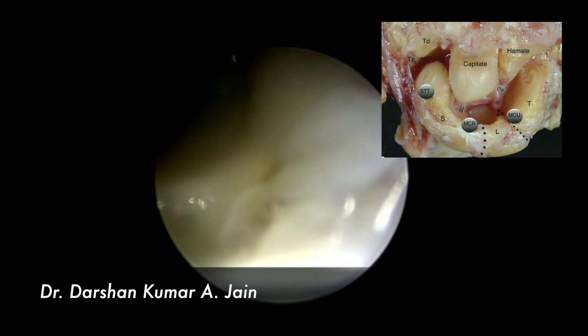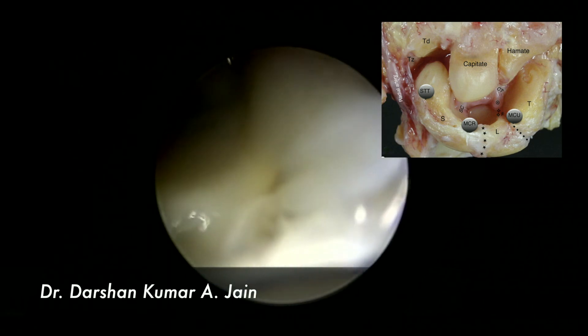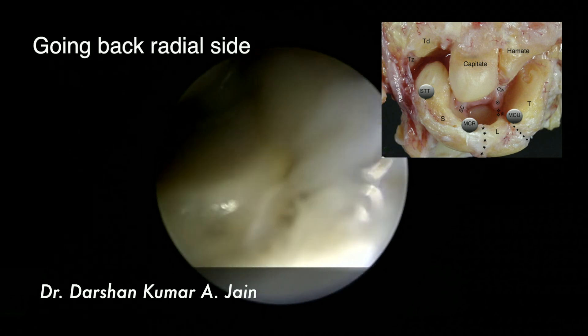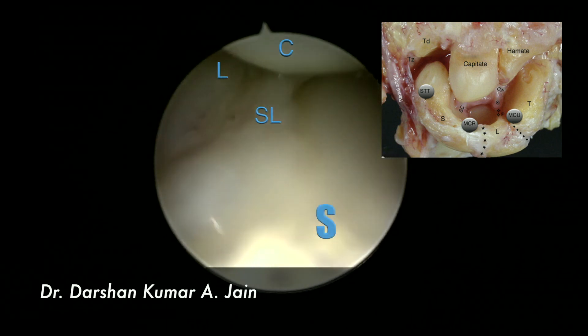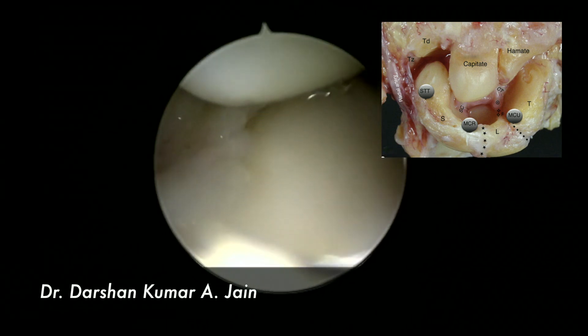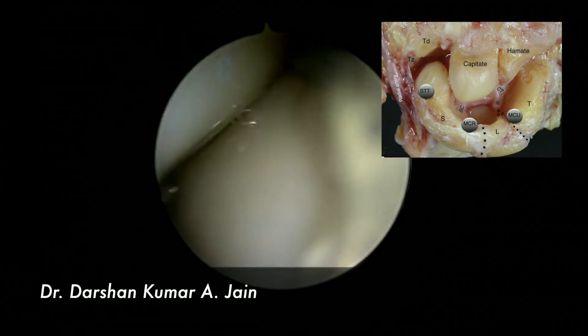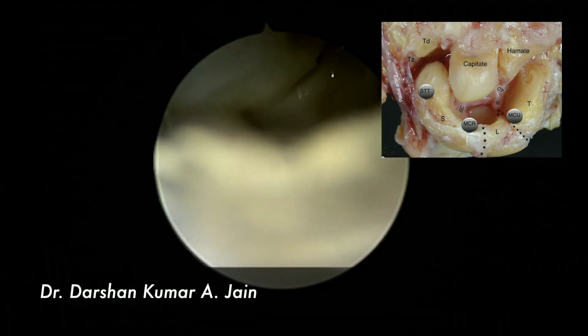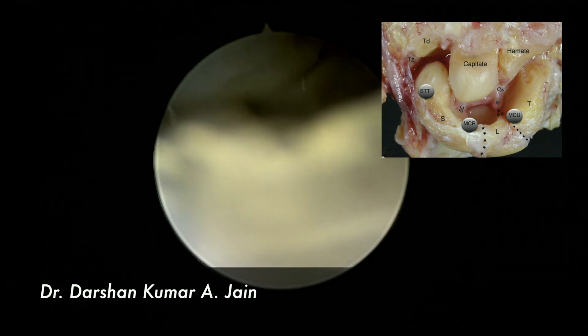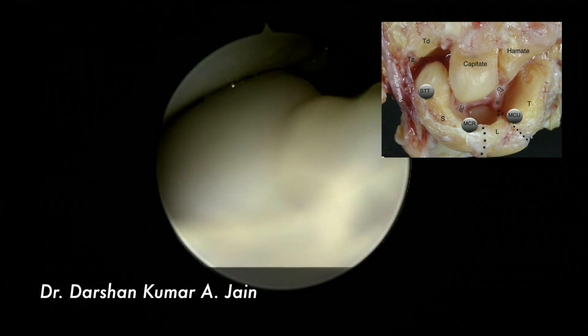And further moving radially, you can see the capitate, scaphoid, and further radially, you could see the trapezium and the trapezoid.